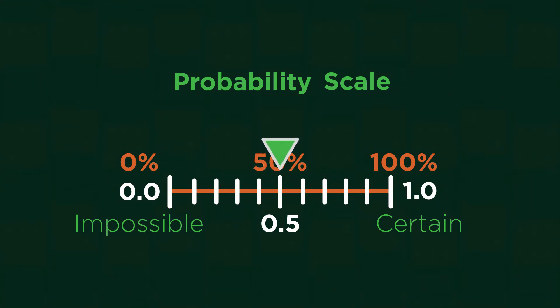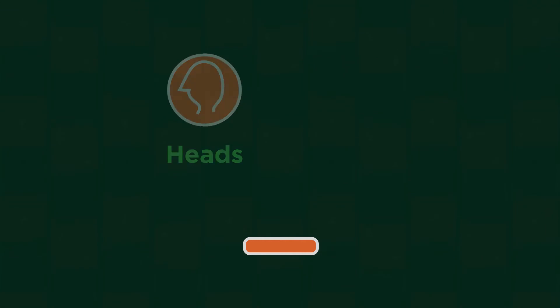Another use of probability is to distinguish between expected outcomes and real outcomes. For example, tossing a coin. You expect that there is an even chance of getting heads or tails.